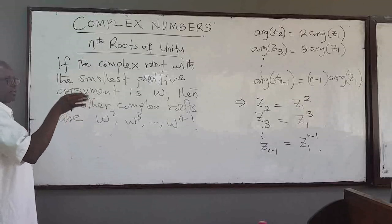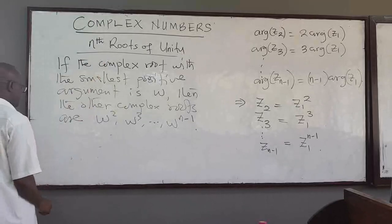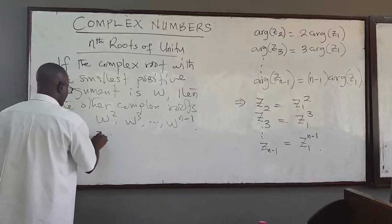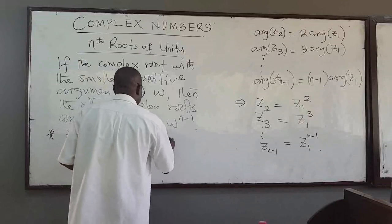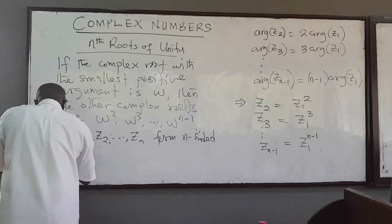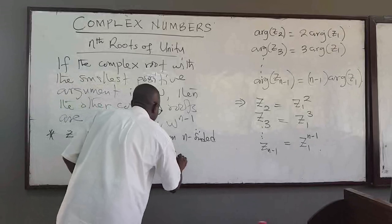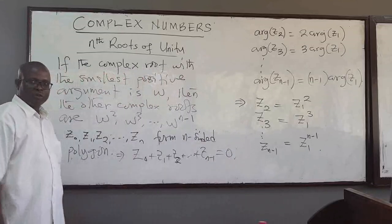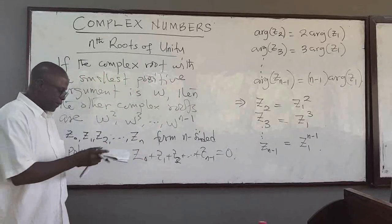So we get z0, and given z1 we can get the rest of the complex roots of unity. Also, z0, z1, z2, and so on form an n-sided polygon. That is why when you add z0 + z1 + z2 + ... + z(n−1), the sum equals zero. This is a generalization of what was proved for the cube roots of unity.